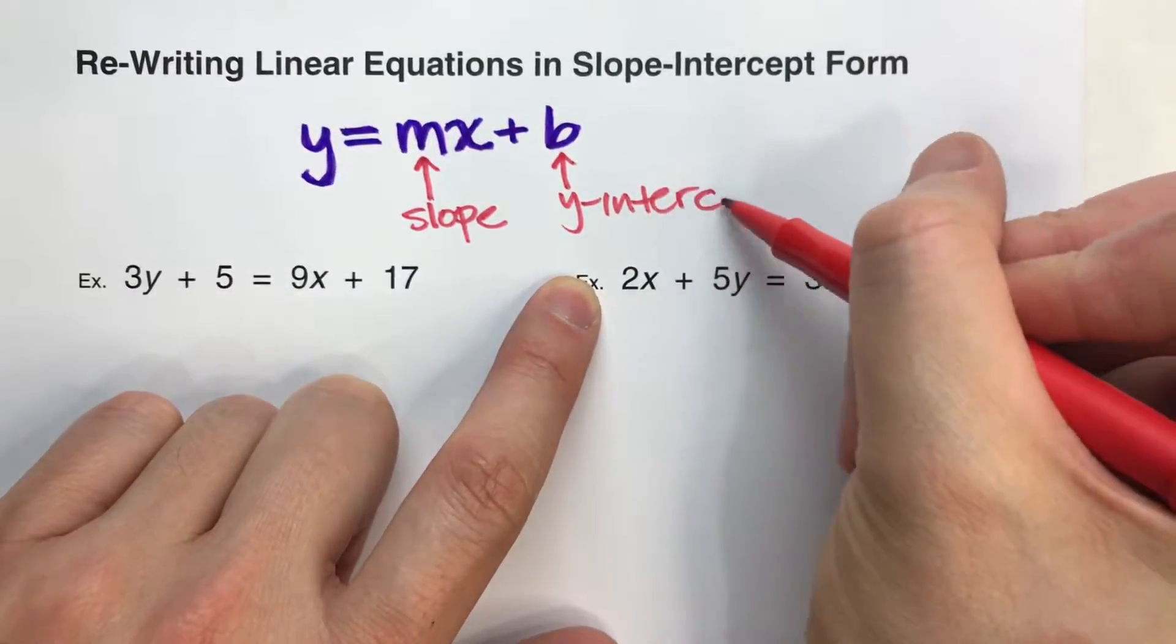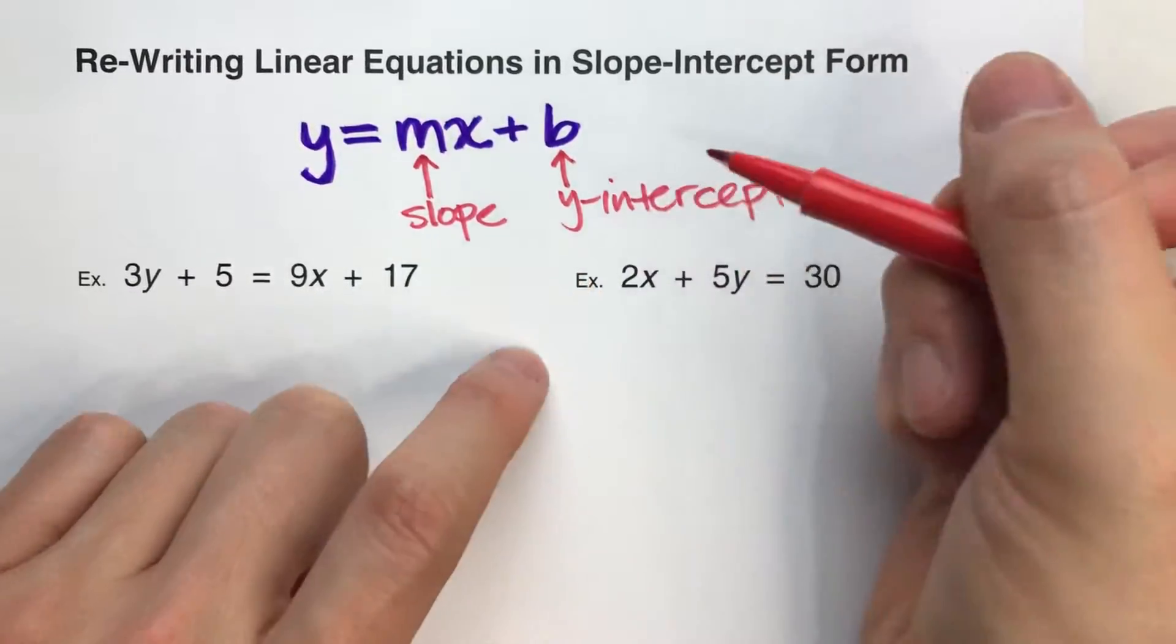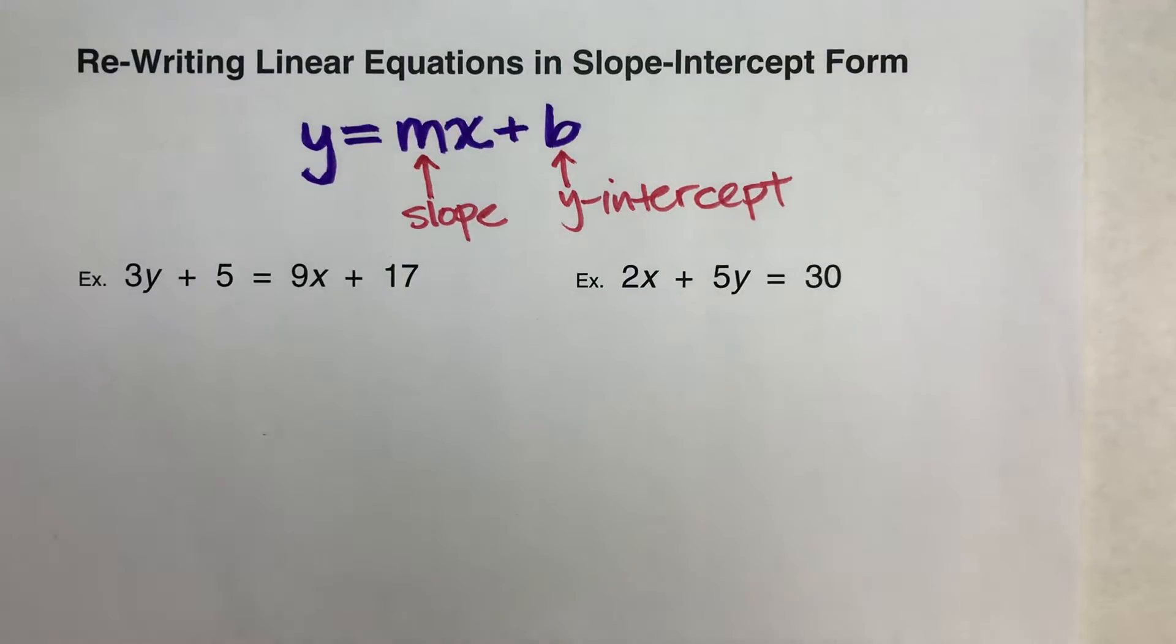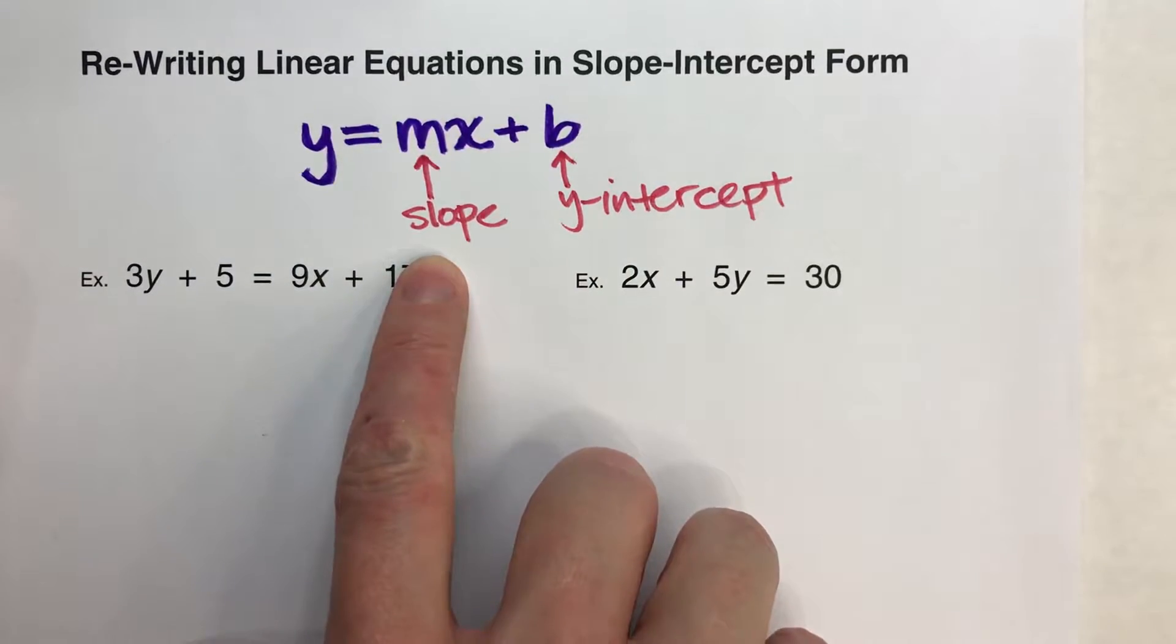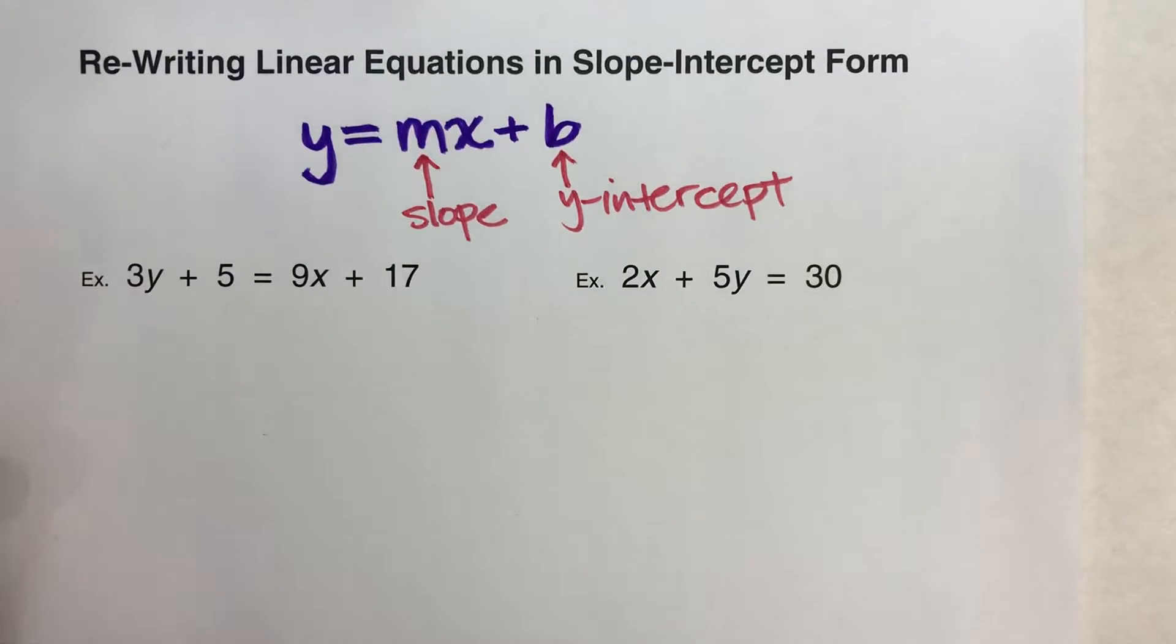The reason why you usually want linear equations in slope-intercept form is because they're easier to graph. You know where they cross the y-axis, you know the pattern of the points, so it's easy to put the graph together.